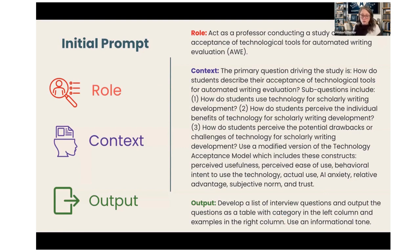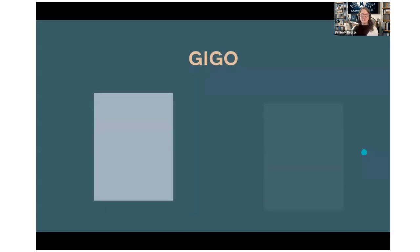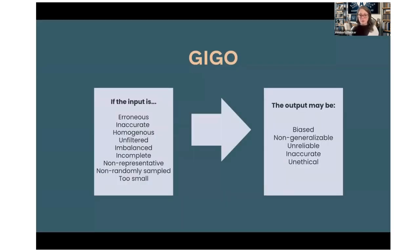Then context: 'The primary question driving the study is...' and you tell it everything you need — sub-questions, and this prompter says to use a modified version of the TAM model with details about what that model includes. Seminal models like TAM are usually known to large language models. Then output: 'Develop a list of interview questions and output them as a table with category on the left and examples on the right, and use an informational tone.' That's a solid basic structure: role, goal, context, output.